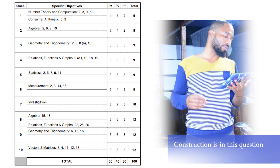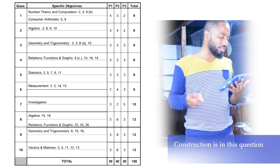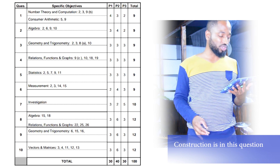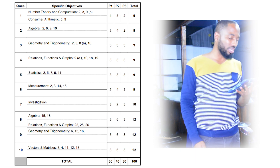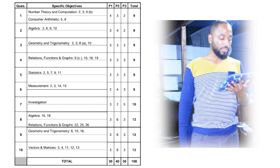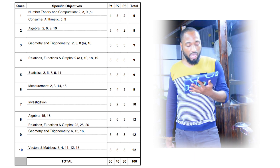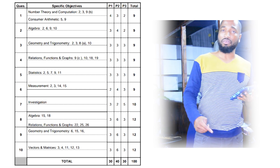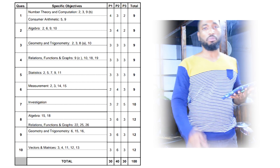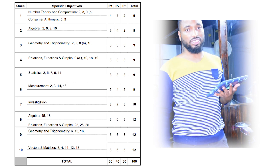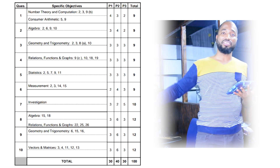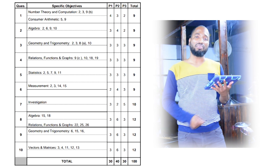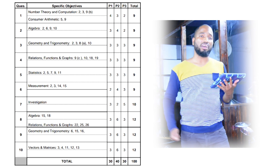Number three is basic geometry and trigonometry. In trigonometry you'll be tested on Pythagoras' theorem and the trigonometric ratios — SOH CAH TOA and stuff like that. Number four is relations, functions and graphs. You have f(x), g(x), composite, inverse functions and graphs, and maybe some quadratic graphs or linear graphs.